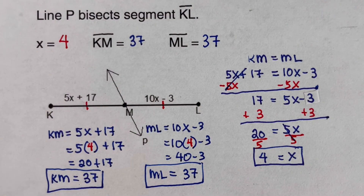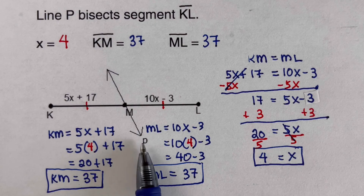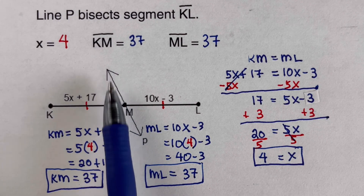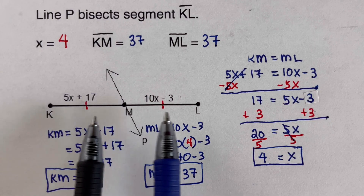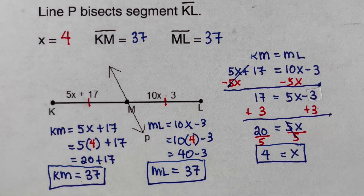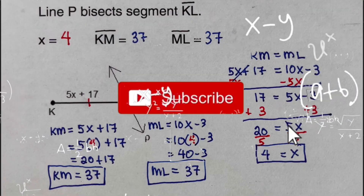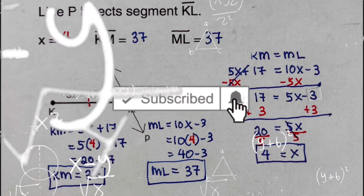Both KM and ML equal 37, which makes sense because line p is the segment bisector, meaning KM is equal to ML. That's it! If you find this video helpful, hit like and subscribe for more math videos.